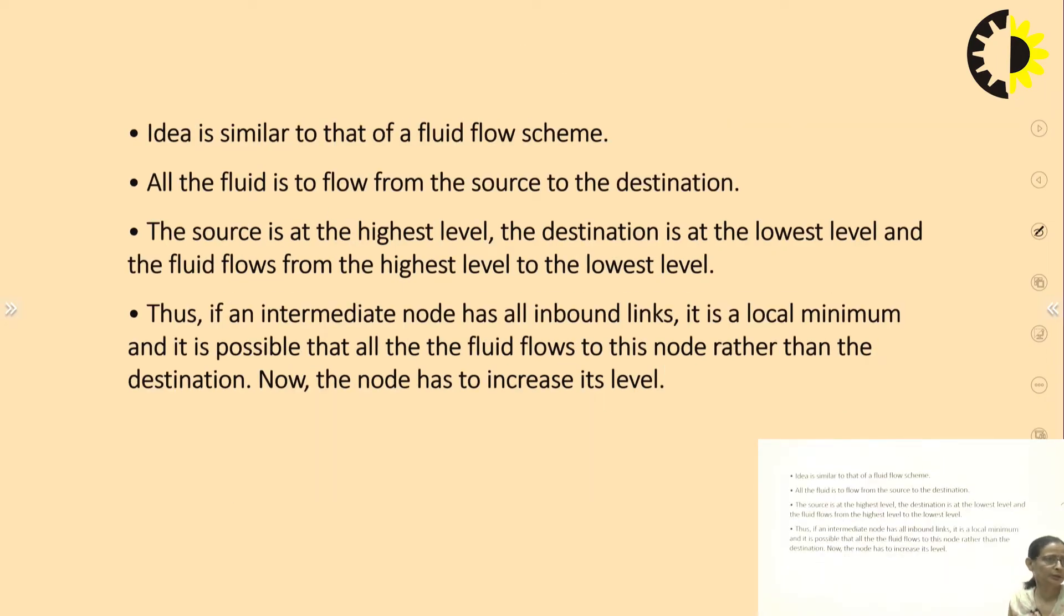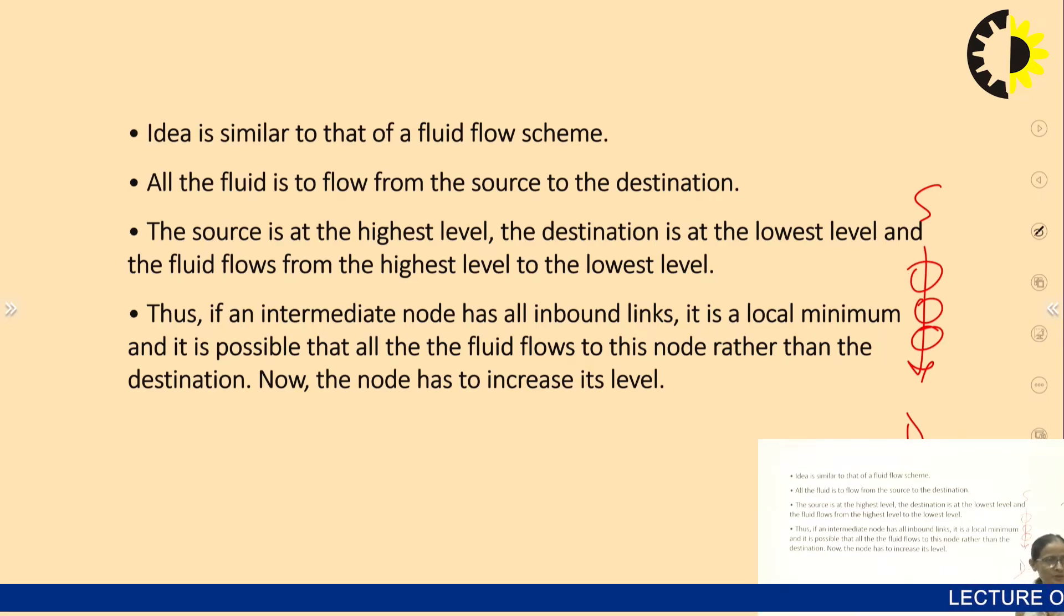The idea is similar to that of a fluid flow scheme. All the fluid is to flow from source to destination. The source is at the highest level and the destination is at the lowest level. The fluid flows from highest level to lowest level. If an intermediate node has all inbound links to it, then it is a local minimum and it is possible that all the fluid flows to this node rather than to destination. That is, the packet is never reaching its destination. Now the node has to increase its level.